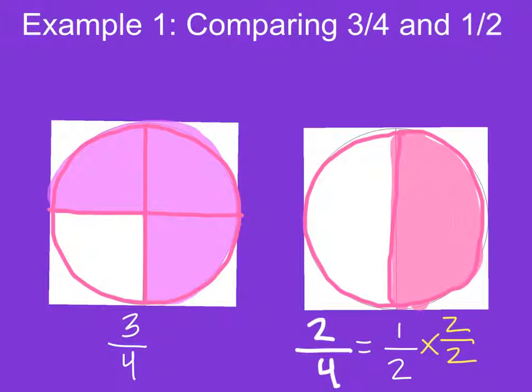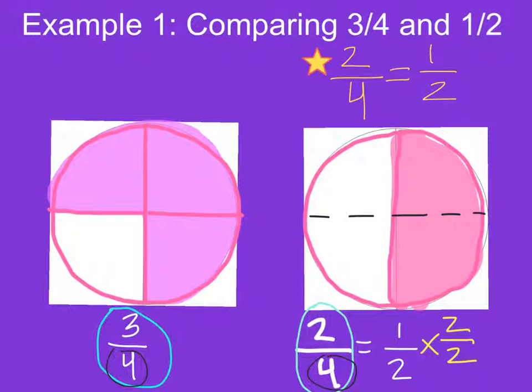Now, since three-fourths and two-fourths have the same denominator, we can compare them. Now, we can easily see that three-fourths is greater than two-fourths.